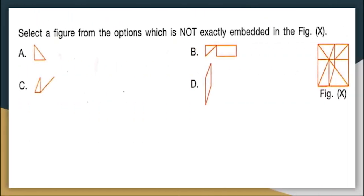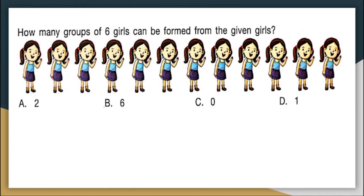Select the answer figure from the options which is not exactly embedded in the figure. The answer option which is not exactly embedded in the figure is option B. Option D is embedded here, option A is embedded here and option C is also there. The only one not embedded in the figure is option B. Next question: how many groups of 6 girls can be formed from the given girls? Totally there are 12 girls. The first 6 girls form one group and the next 6 girls form another group. So we can form 2 such groups. Your answer here is option A, 2.